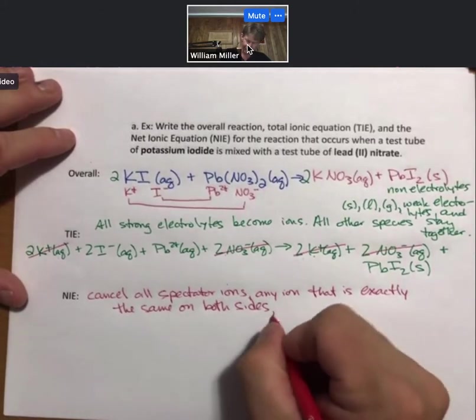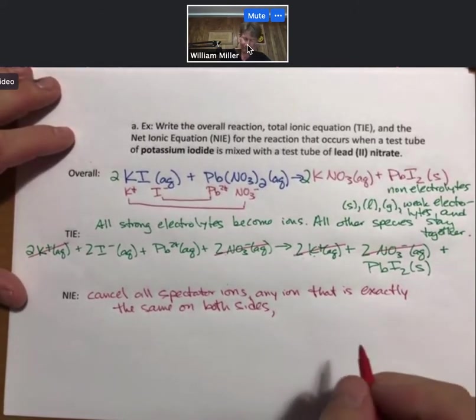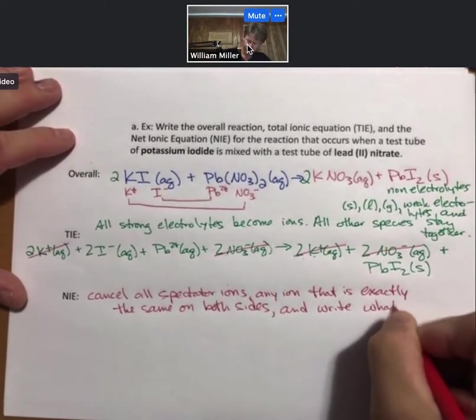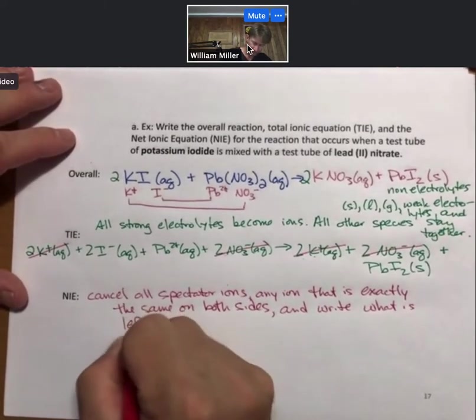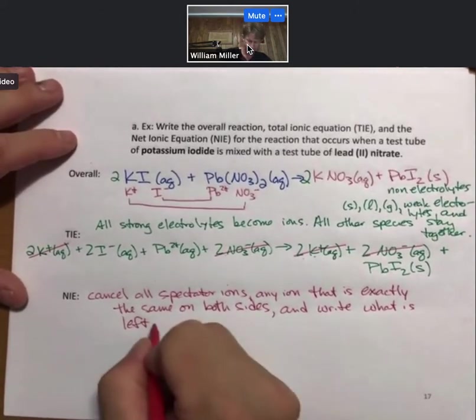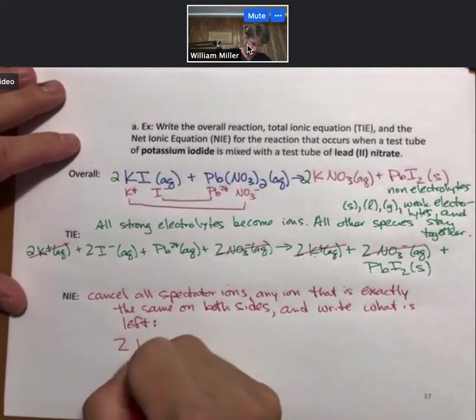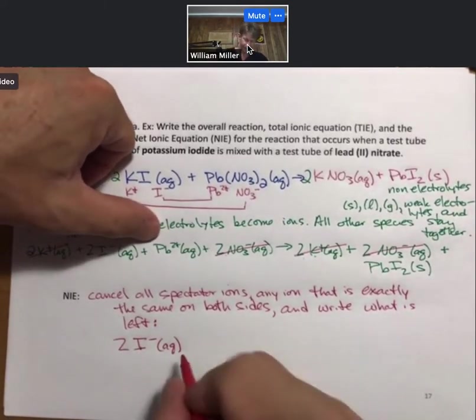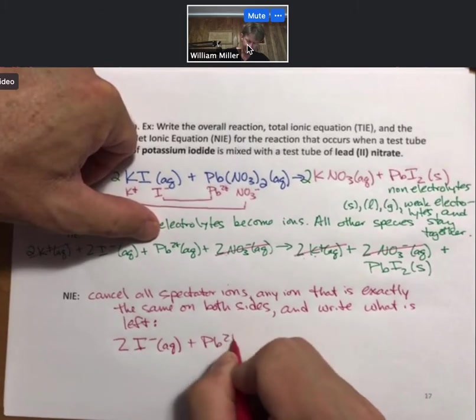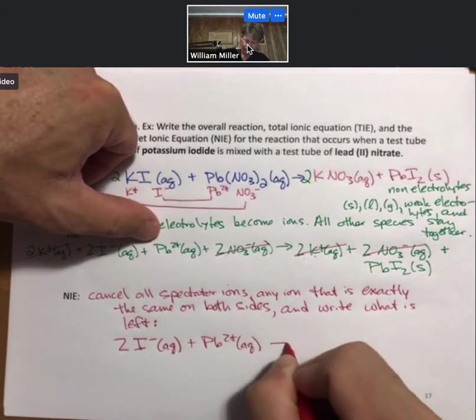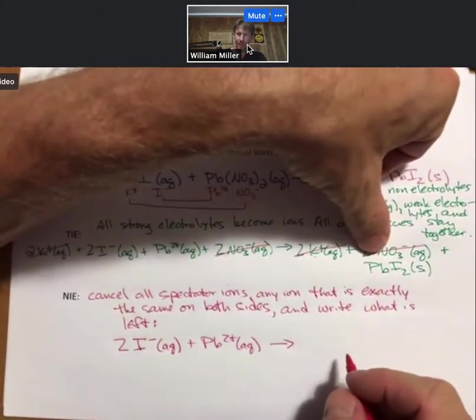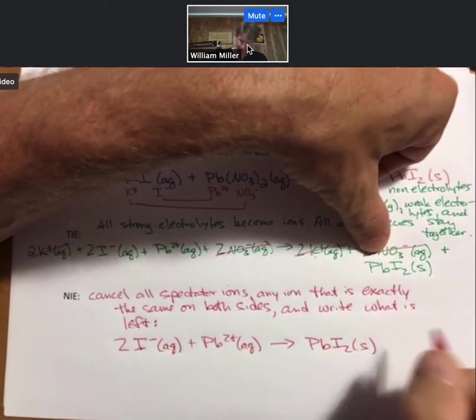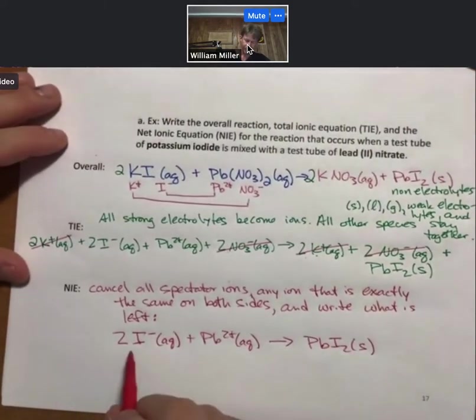And then, so cancel all spectator ions, definition of those, and write what is left. We're left with 2 iodide ions plus a lead 2 ion goes to lead 2 iodide solid.